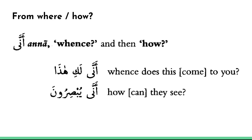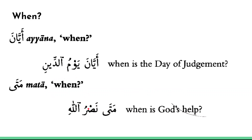Now let's look at how to say 'from where' or 'how,' and the word for that is anna. Anna kind of means 'from where' — like 'where is this coming from?' So anna laki hatha means 'from where does this come to you?' — spoken to a woman. Anna yubsiroon means 'how do they see?' — yubsiroon means 'they see,' and anna asks how.